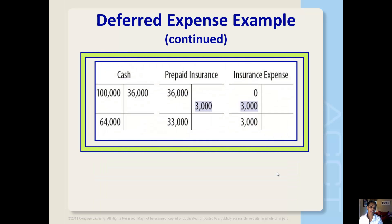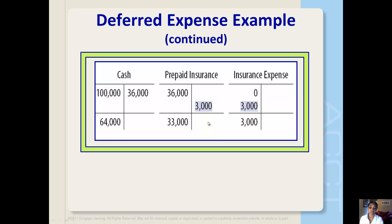Continuing with this same example, let's look at the T-accounts. Assume that the cash account had a $100,000 balance prior to March 1st. After posting, the insurance expense T-account will show the $3,000 of insurance that was consumed, with $33,000 of insurance remaining in prepaid insurance. Prepaid insurance starts with a debit balance of $36,000 paid; we credit off $3,000, leaving $33,000 for the next 11 months at $3,000 per month. Also, the cash account shows a balance of $64,000. Notice that the cash account was not affected by that adjusting journal entry for the $3,000.